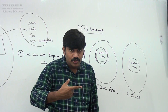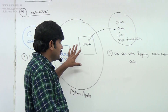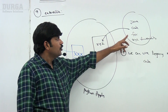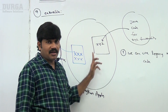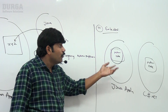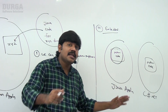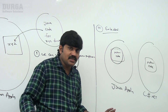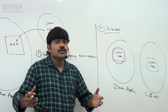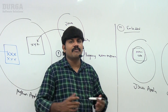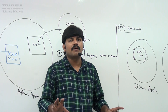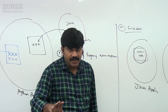So to summarize: extensible means in our Python application you can use other language code; embedded means we can use Python code in any other languages also. Together, Python with other languages can do wonderful things.